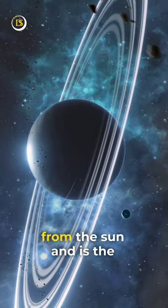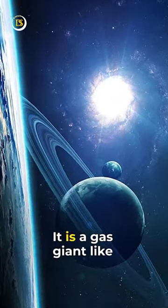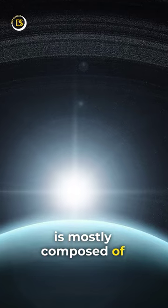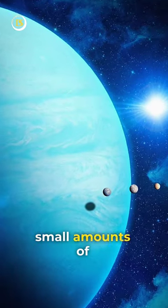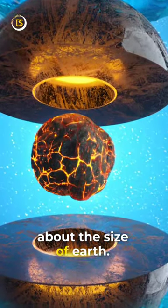Uranus is the seventh planet from the Sun and is the third largest planet in our solar system. It is a gas giant, like Jupiter and Saturn, and is mostly composed of hydrogen and helium, with small amounts of methane. It also has a small rocky core, which is thought to be about the size of Earth.